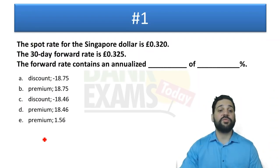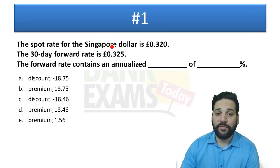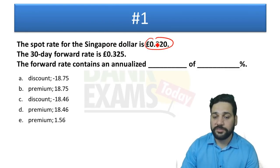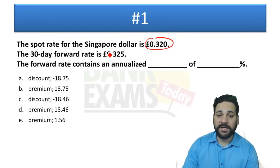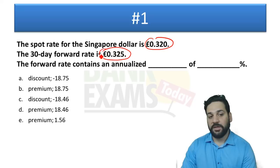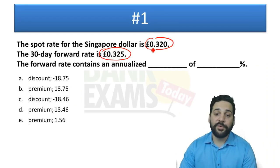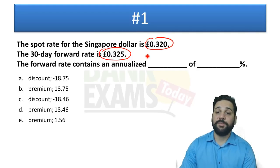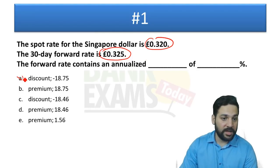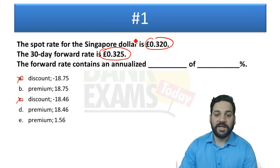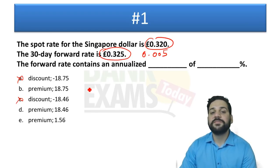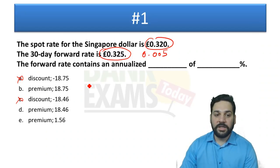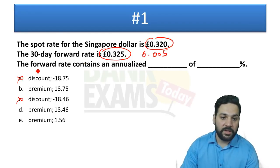Question 1: The spot rate for the Singapore dollar is 0.320 pounds and the 30-day forward rate is 0.325 pounds. What does this mean? The Singapore dollar is trading at a premium of 0.005. Now how do we find the annualized premium?